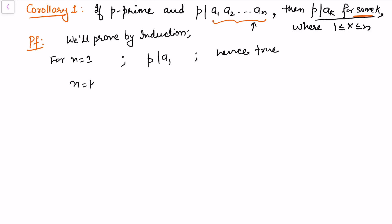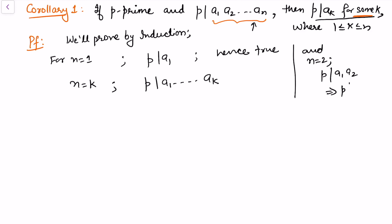We want to prove that p divides a_k for some value. Assume the result holds for n = k, meaning p divides a1·...·a_k implies p divides some a_i. Also note that from the previous theorem the n = 2 case holds: whenever p divides a1·a2, either p divides a1 or p divides a2, so p must divide some a_i where i is between 1 and 2.